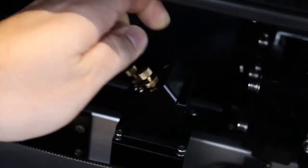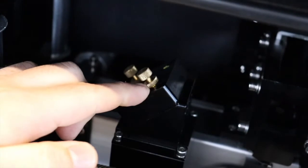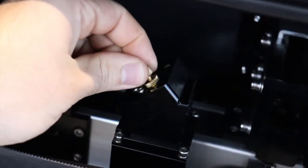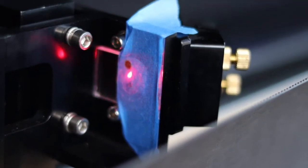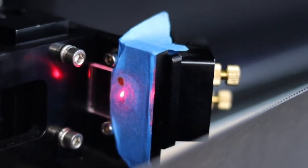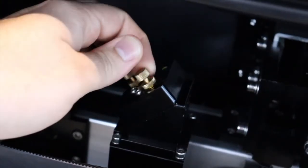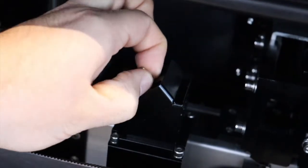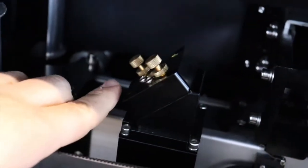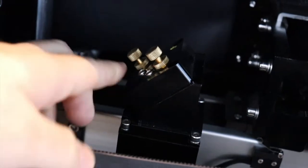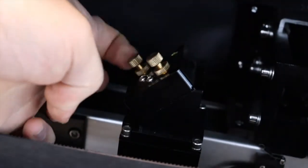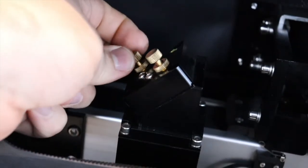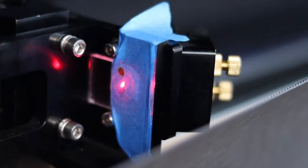In order to adjust that, we're going to release this bottom brass lock knob, then turn the top part to move our beam path. With the top knob, clockwise will move the beam down and counterclockwise will move the beam up. The second knob clockwise will move the beam right and counterclockwise will move the beam left. Adjust as you need and after any adjustment is made, make sure you tighten down the lock knob.